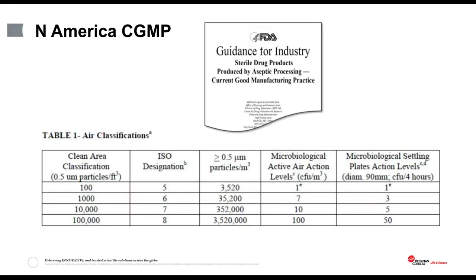The North American CGMP document differs from the European and World Health Organization guidance in that it only mentions one particle size: the 0.5 micron particle. However, drug manufacturers based in North America wanting to sell their products outside of North America must count particles of both 0.5 and 5 microns, as they must be in compliance with the standards used in the countries to which they want to export.